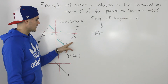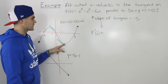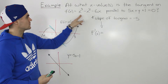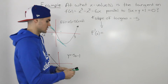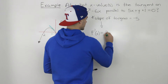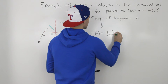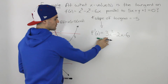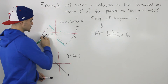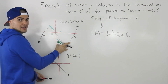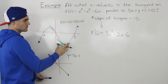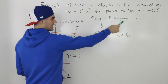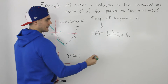We can find the slope of the tangent on this function at any x value as long as we have its derivative. The derivative of this function is 3x² - 2x - 6. This derivative gives us the slope of any tangent at any x value. We want to find the x values for which the slope of the tangent equals negative five.